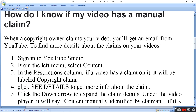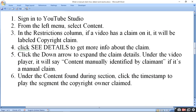To view claim details, go to YouTube Studio and select Content in the left menu. Then go to the Restriction column and find the video claim. Click the down arrow to expand the claim details. Content manually identified by the claimant will be marked as a manual claim.